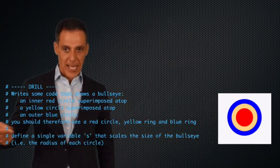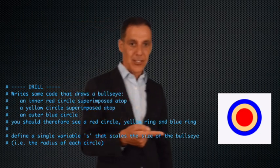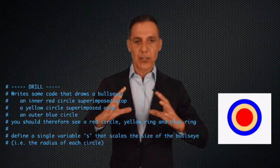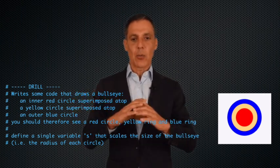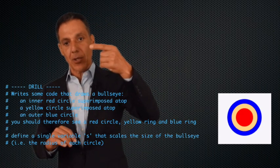The only other little catch is I'm going to ask you to define a single variable, S, that scales the size of the bullseye. You can pick whatever canvas, 200 by 200 canvas is fine, the way we've been doing it. Make them as big or as small as you want, but I should be able to, by changing a single variable, S, change the scale of that bullseye.